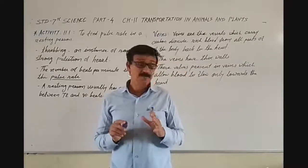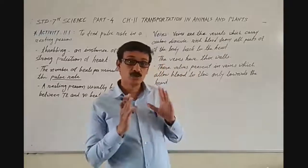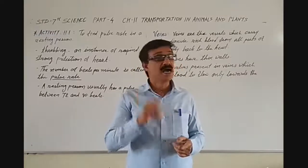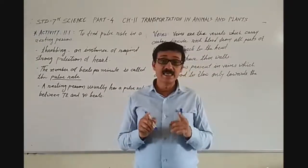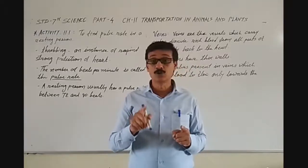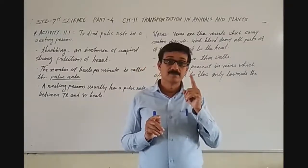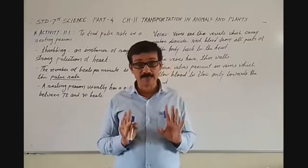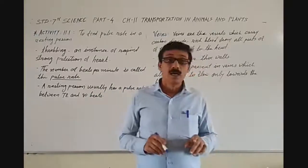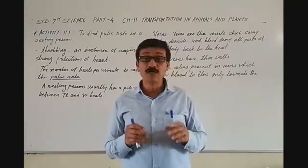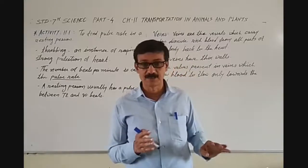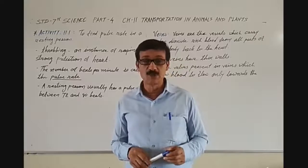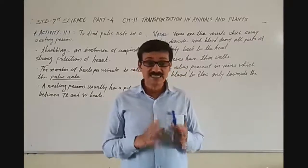In the last part we discussed about blood vessels, and we came to know there are 2 types of blood vessels in our body: arteries and veins. We discussed that arteries carry oxygen-rich blood from the heart to all parts of the body. Since the blood flow is rapid and at a high pressure, the arteries have thick elastic walls.